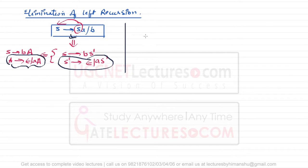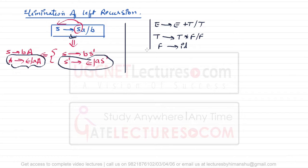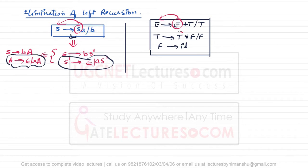Let us see a few examples of left recursion elimination. The first grammar is: E derives E plus T slash T, T derives T star F slash F, and F derives id. You can see that in this grammar there is left recursion in E derives E plus T slash T, and also in T derives T star F slash F. We have to eliminate these left recursions using the formula.